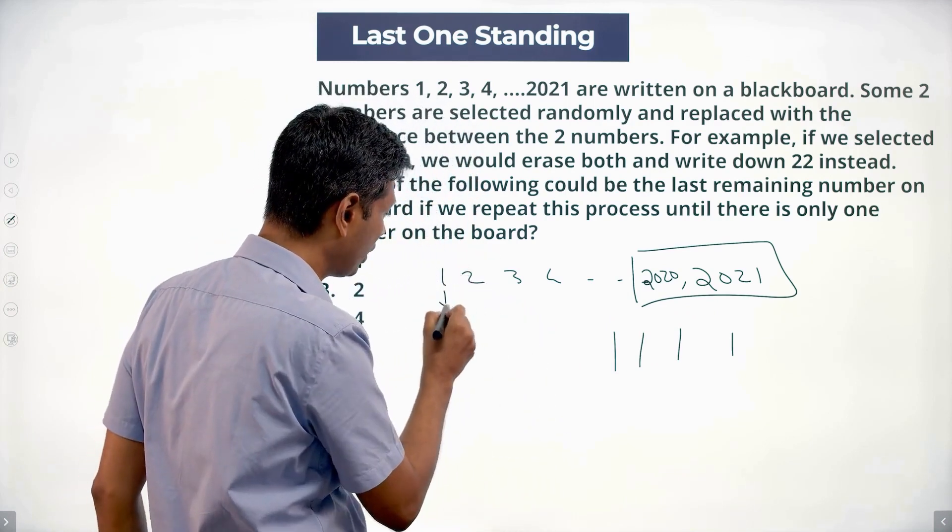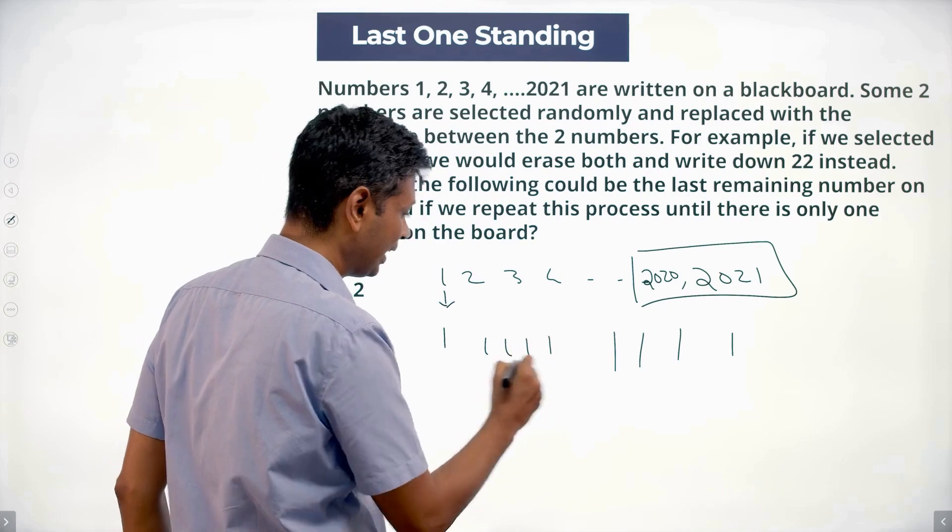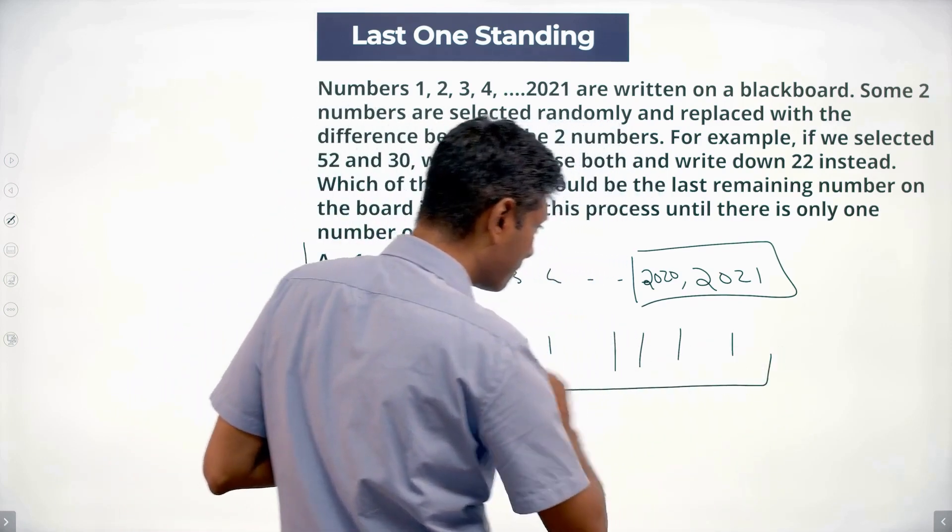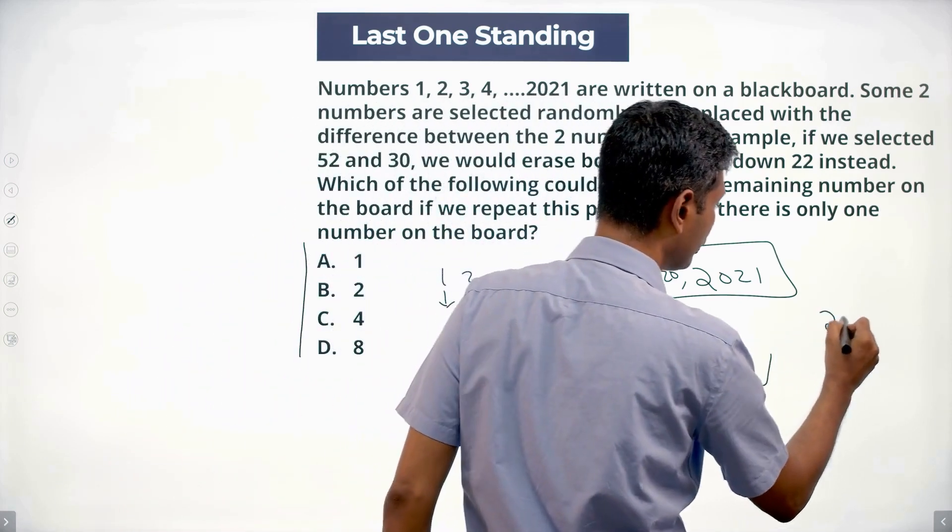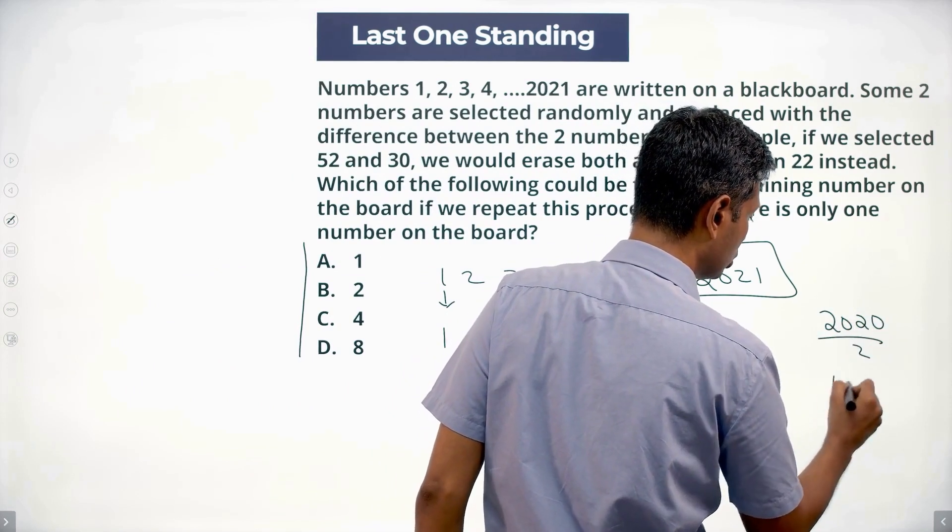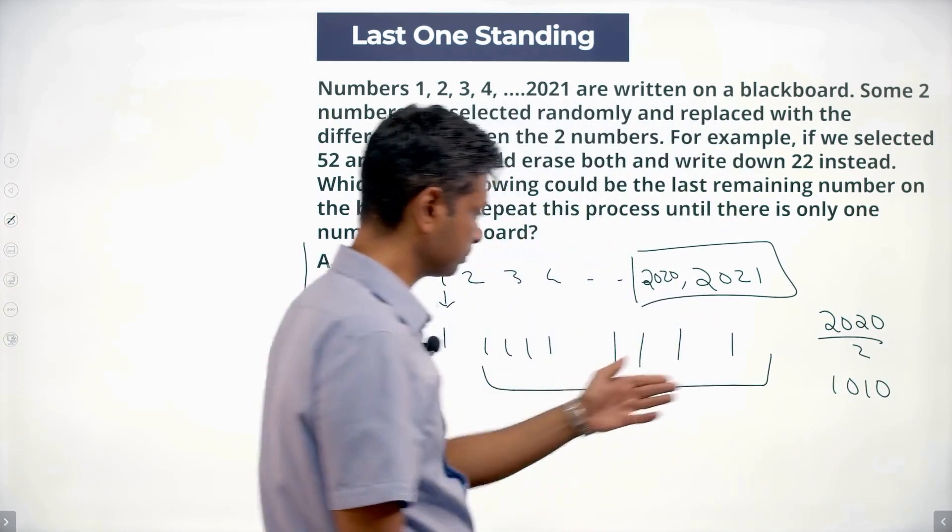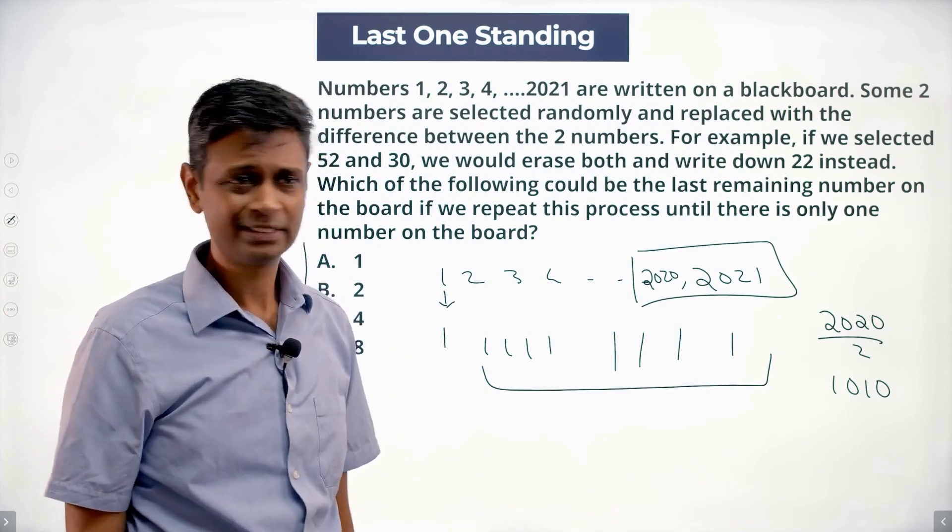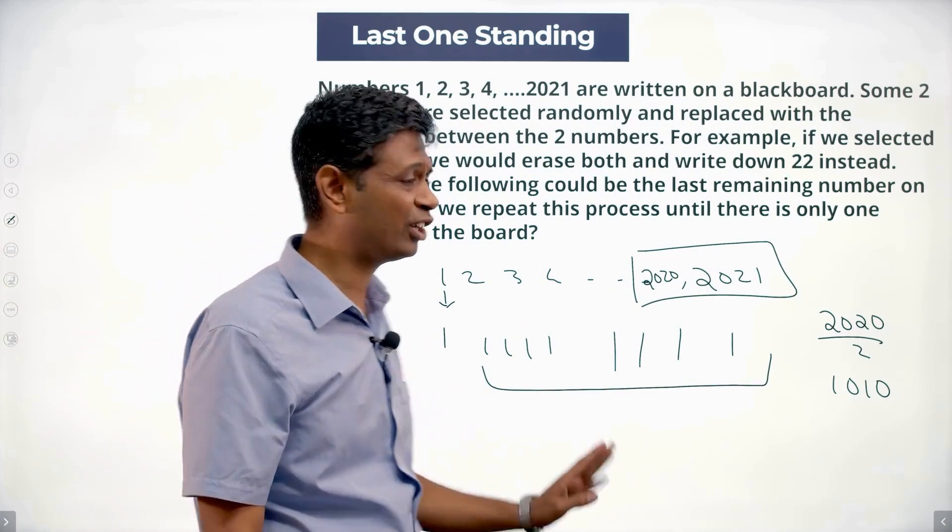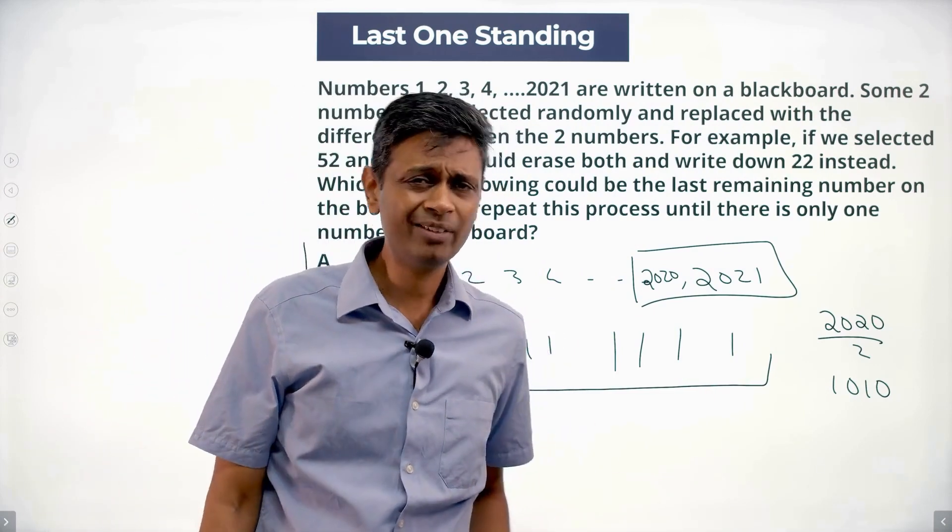Finally I'll have this 1 remaining and I'll have how many pairs are there - 2020 numbers I'm pairing up, 2020 by 2, 1010 ones will be there. Nice. So I have 1011 ones with me and I'll do the same process.